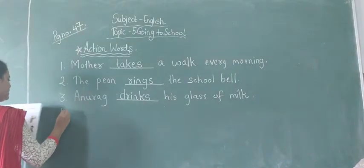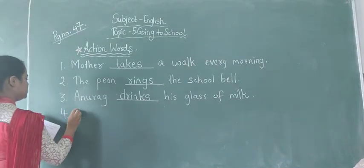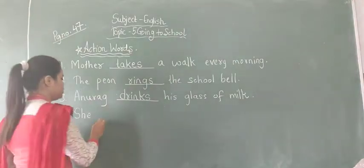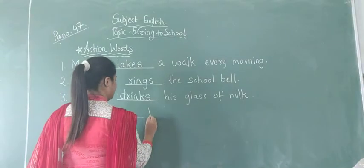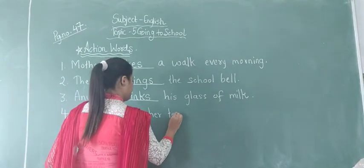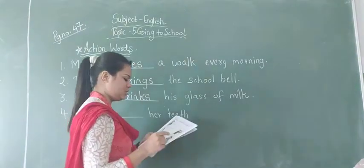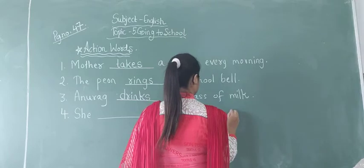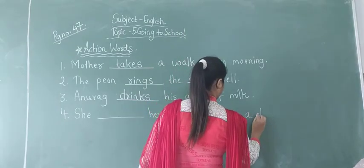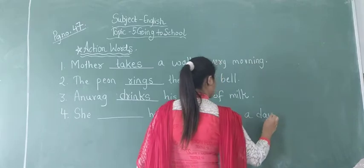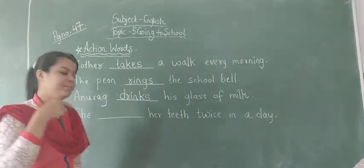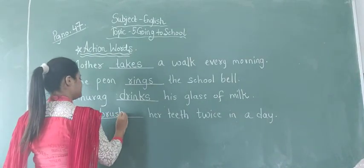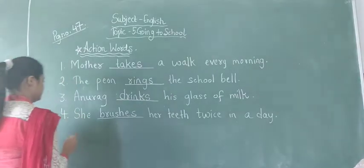After that, number four sentence. She — 'she' is used for a girl. You can see a girl here. She brushes her teeth twice in a day. So here we will write B-R-U-S-H-E-S, brushes.